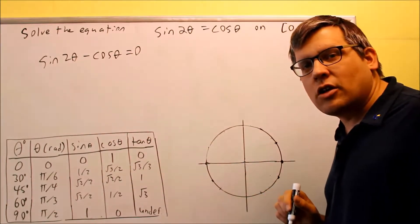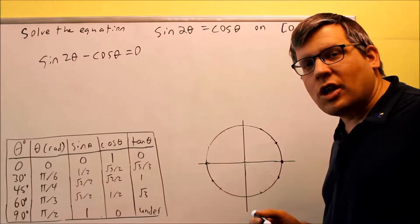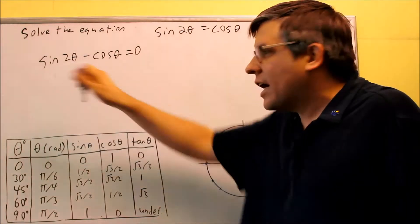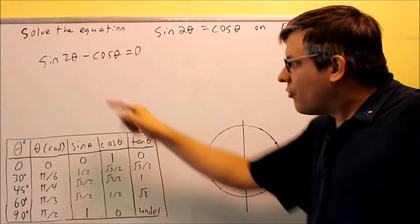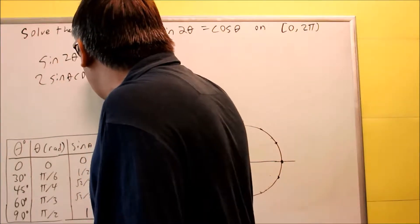So I'm going to put an identity for sine 2 theta, and it requires me to look back at my double angle and half angle formulas again. So if I look at those, I actually only have one formula for sine 2 theta, and what that is, it's 2 sine theta cosine theta.